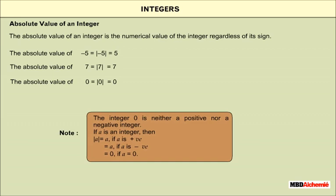The integer 0 is neither positive nor negative. Formally, if A is an integer: the modulus of A equals A if A is positive; the modulus of A equals minus A if A is negative; and the modulus of A equals 0 if A equals 0.